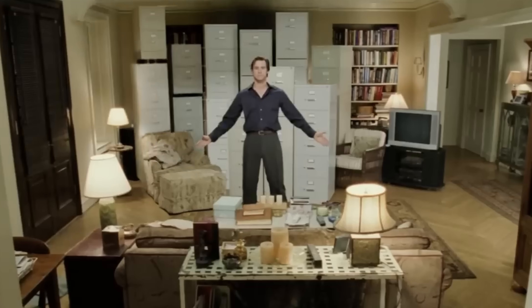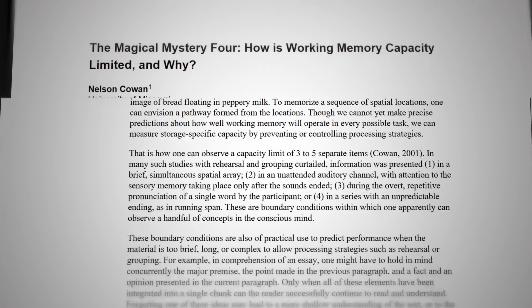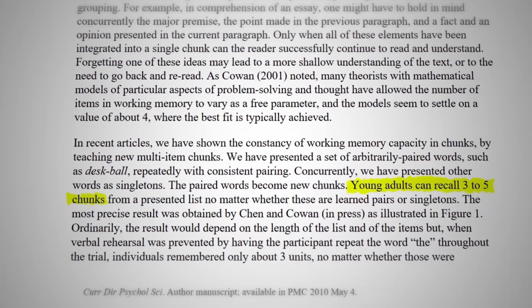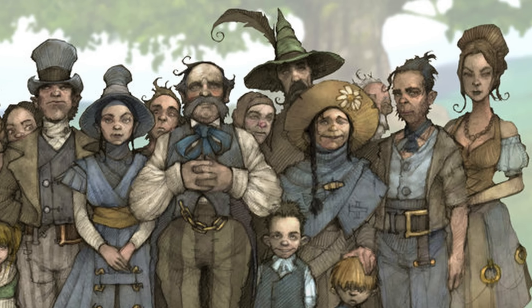Speaking of your players remembering things, you're probably wasting your time by giving too many details about NPCs that your players won't actually remember. A paper written by Nelson Cowan in 2001 looked at several studies on short-term memory capacity and concluded that most young adults have a working memory capacity of three to five chunks. For the purpose of what we're talking about, a chunk is a detail, like brown hair for example. This means that on average, for information delivered through one sensory channel — like me telling you something — without repetition, a person can absorb three to five details if they're given in rapid succession.